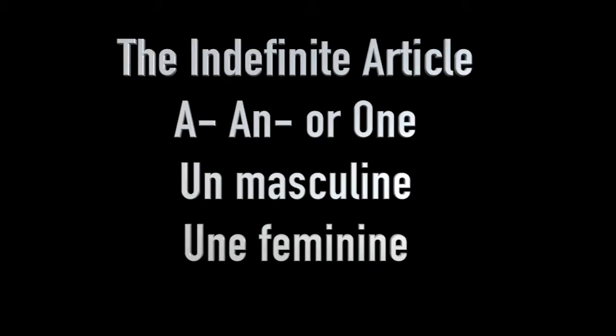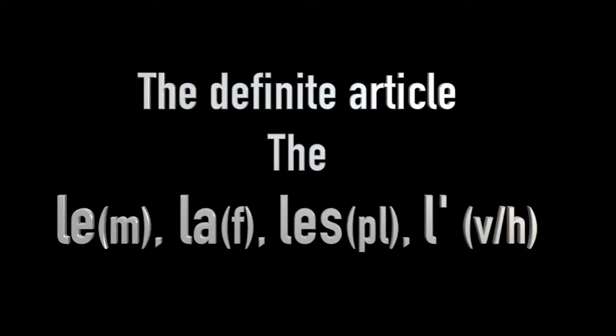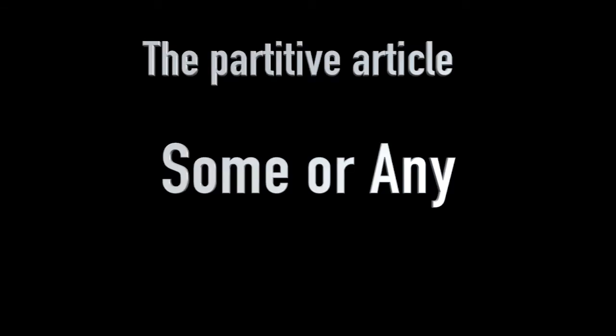So we've looked at the indefinite article — a, an, or one — and we've looked at the definite article 'the'. Now we're going to look at something called the partitive article. It's got the word 'part' in it, which means the sense that you don't want all of something. So what the partitive article refers to is 'some' or 'any' — not the whole thing, but some or any of something.